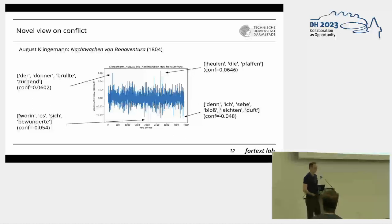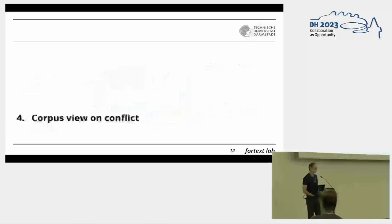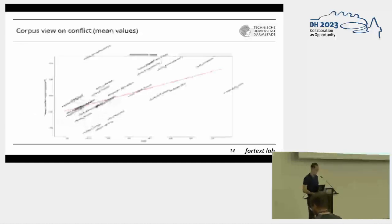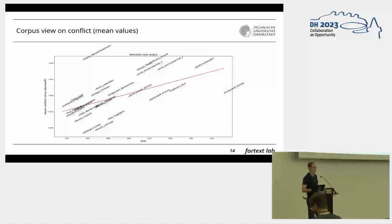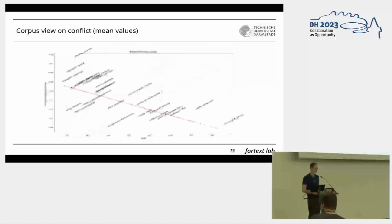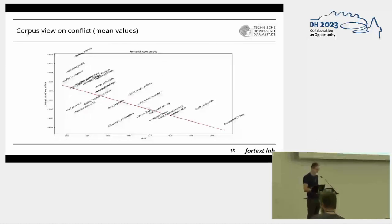Besides looking at single novels, let's now look at this entire sub-corpus of 26 novels from the core Romantic period. I calculated the average value over all verb phrases in each novel and compared them using the Dornsai labels. Plotting this, we can see there seems to be an increase of conflict in this core Romantic period. This increase in conflict interestingly also correlates with the decrease in average valence values in this corpus.